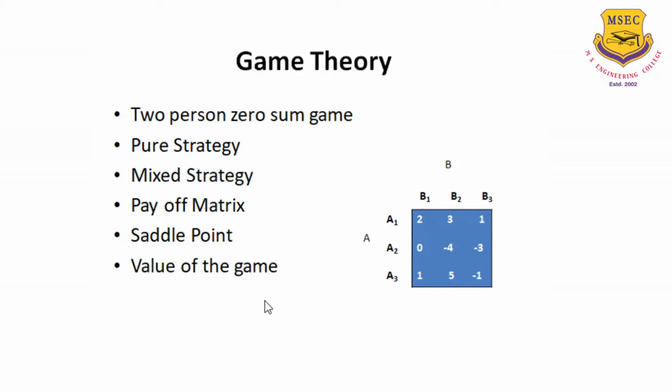That means he will play only A1. Similarly, B also has got a choice to play either B1, B2, or B3. When he knows that he is going to play only the B2 strategy, then we say that he is going to play only the pure strategy. In some cases where A does not know whether he is going to play either strategy A1 or A2 — for example, let's say around 40% of the time he plays A1 and 60% of the time he plays A2 — in that case, we say that A is playing mixed strategies.